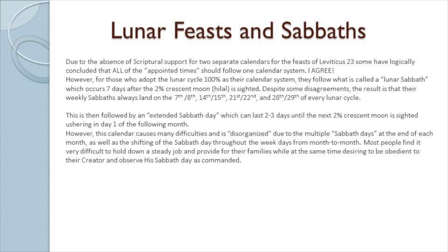For those who adopt the lunar cycle 100% as their calendar system, they follow what is called a lunar Sabbath, which occurs seven days after the 2% crescent moon or Hillel is cited. Their weekly Sabbaths always land on the 7th or 8th, 14th or 15th, 21st or 22nd, 28th or 29th of every lunar cycle. This is then followed by an extended Sabbath day which can last two to three days until the next 2% crescent is spotted, ushering in day one of the following month. This calendar causes many difficulties and is very disorganized, and most people find it very difficult to hold down a steady job and provide for their families while at the same time desiring to observe the Sabbath day as commanded.